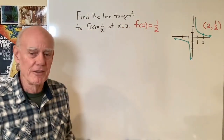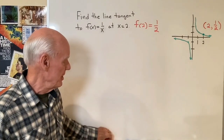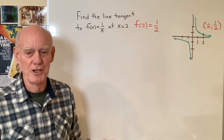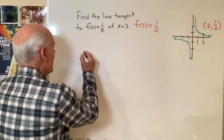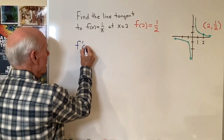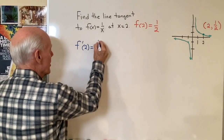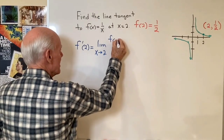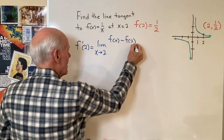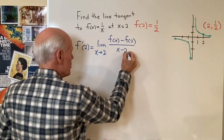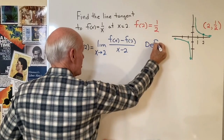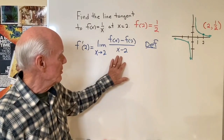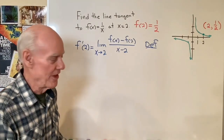Now, to find the equation of the line tangent to the graph, we need to find the slope of that line, and we can find the slope using the derivative. In this case, we want to use the definition for the derivative. So f prime of 2 is going to be the limit as x goes to 2 of f of x minus f of 2, all divided by x minus 2. That is just the definition for the derivative of a function at a specific point. So now all I need to do is simplify this, find the limit, and I'll have the slope of that line.